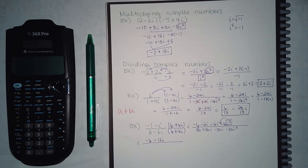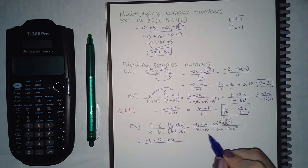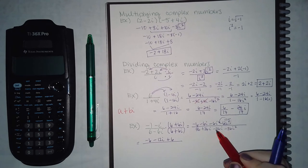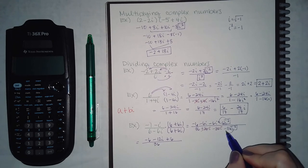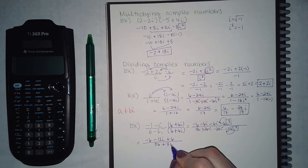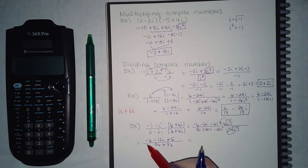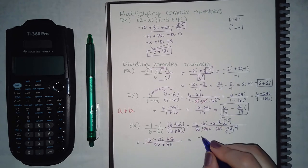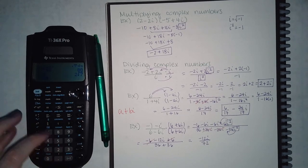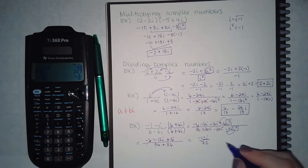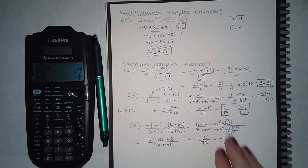On the bottom I get 36, plus 36i, minus 36i, and minus 36i squared. The middle terms on the bottom cancel since they're opposite signs. On the top, the two negative 6i terms combine to give negative 12i. Since i squared changes the sign, the negative 6i squared becomes positive 6 on top, and the negative 36i squared becomes positive 36 on the bottom.